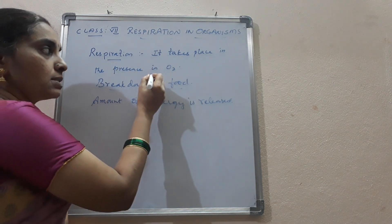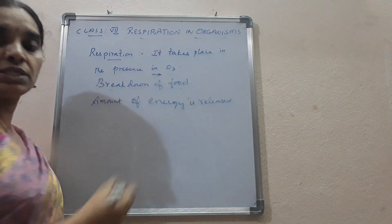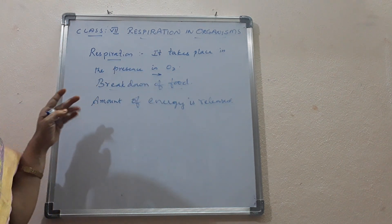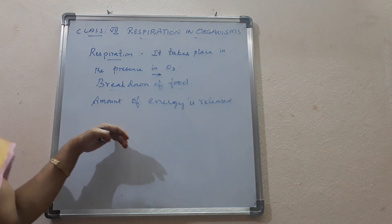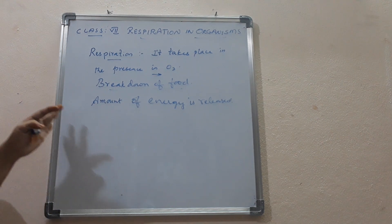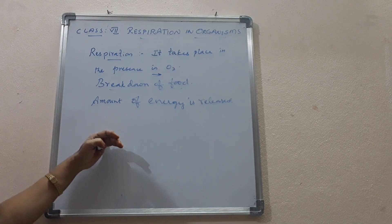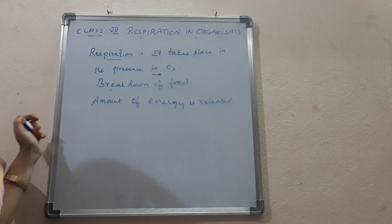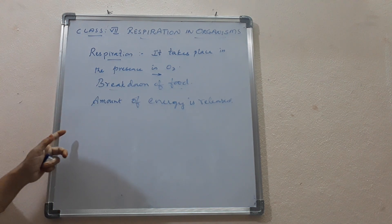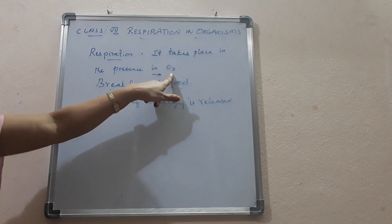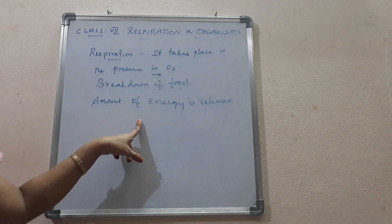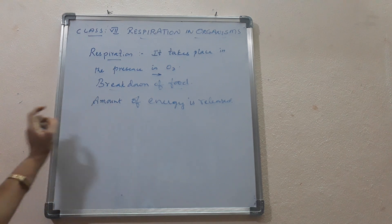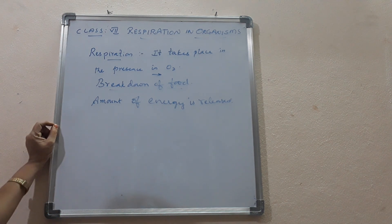During the respiration process, in aerobic respiration, glucose plus oxygen in the presence of energy gives rise to carbon dioxide and water. Whereas in the absence of oxygen, the food gives rise to alcohol and carbon dioxide with a less amount of energy.